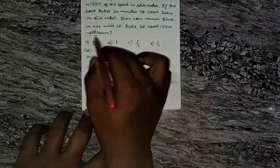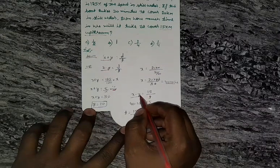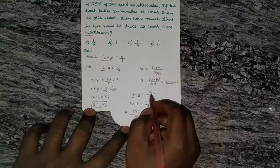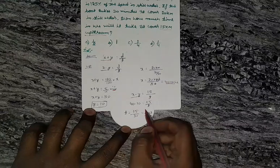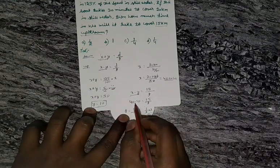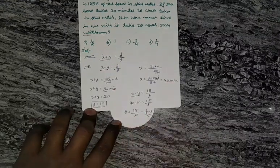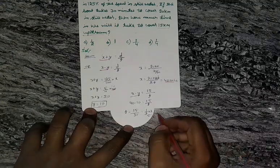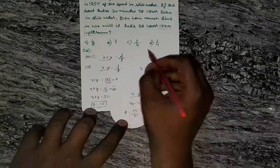For upstream, the distance to cover is 15 kilometers, and upstream speed is x minus y equals 40 minus 10 equals 30. Time t equals 15 divided by 30, which equals one half hour, that is 30 minutes to cover 15 kilometers upstream.